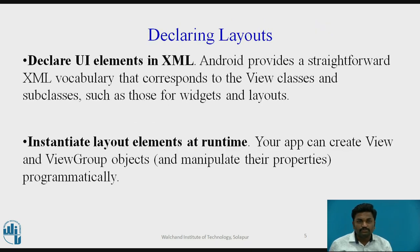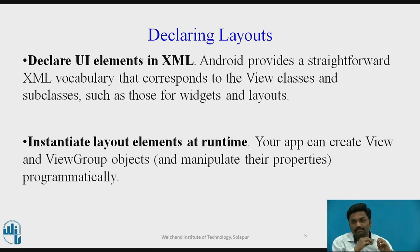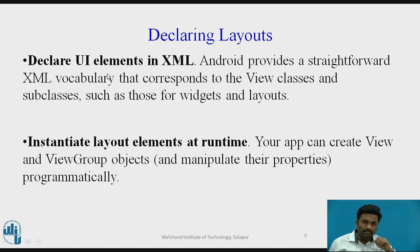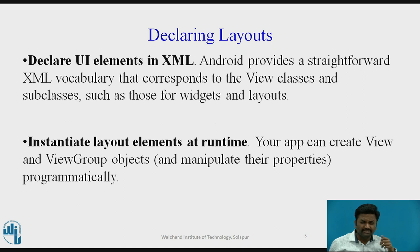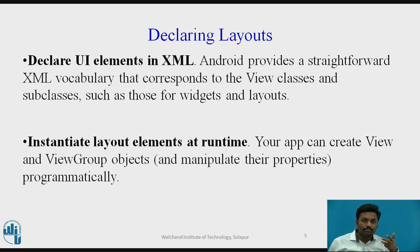Now, declaring layouts — how can you declare a layout? There are two ways to declare a layout. One is using an XML file: we have a .layout.xml file, a mainactivity.xml file. All your layouts are defined inside XML files. Android provides a straightforward XML vocabulary that corresponds to view classes. All your buttons, radio buttons, checkboxes, any component, can be added into an XML file. That particular XML file is one way of putting your components on your layout.